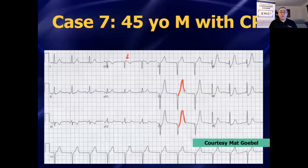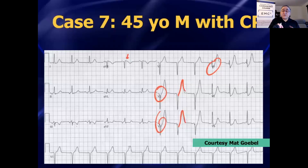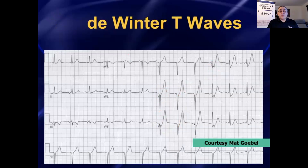This pattern of ST depression shooting into big, tall, hyper-acute T waves in the mid-precordial leads — V2, V3, V4 — ST segment depression shooting into big, tall, hyper-acute T waves in the mid-precordial leads during pain is something that's been identified as what's referred to as the de Winter T wave pattern.